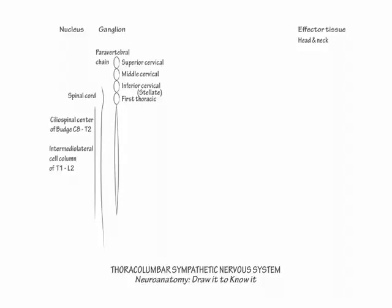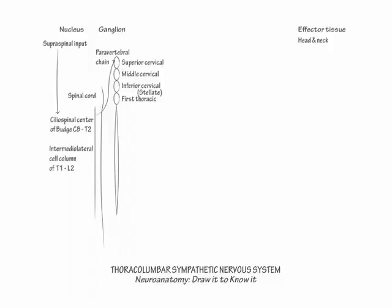Show supraspinal input from the posterolateral hypothalamus descending onto the ciliospinal center of Budge. Regarding sympathetic innervation to the face, since Horner syndrome is so important — draw a representative preganglionic fiber exiting the spinal cord from the ciliospinal center of Budge and ascending the sympathetic chain to the superior cervical ganglion. Paravertebral masses such as apical lung tumors, such as Pancoast tumor, interrupt these exiting preganglionic sympathetic fibers.